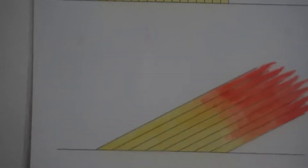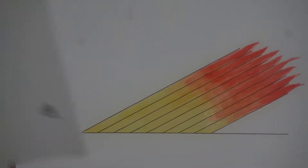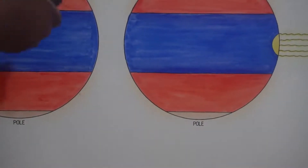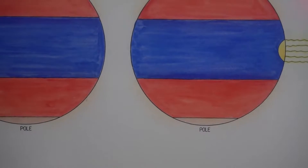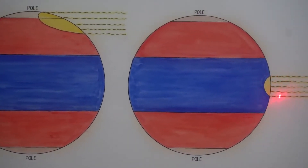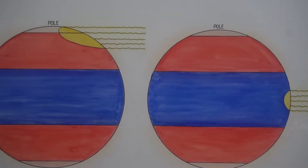Most times, those perpendicular rays — those very hot perpendicular rays — actually fall on the equator. The perpendicular rays most times fall on the equator here. So let's see another thing about the perpendicular rays and the oblique rays.